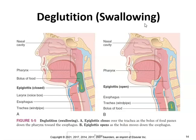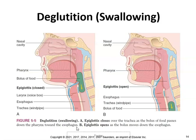Deglutition means swallowing. Here's the nasal cavity, the pharynx, and a bolus of food — which is what you just ate. Here's the epiglottis that has to shut; otherwise, the food goes down the trachea, which could be a problem. The epiglottis closes over the trachea as the bolus of food passes down the pharynx toward the esophagus.